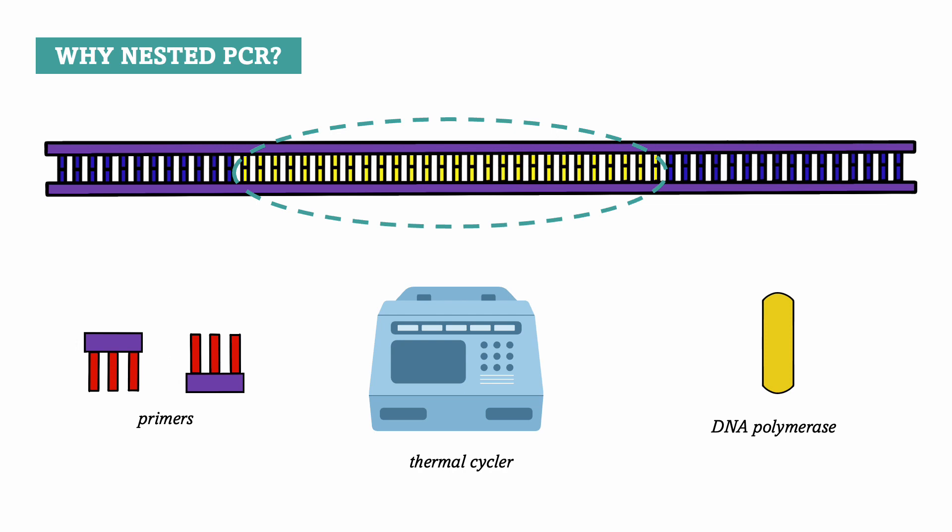What can sometimes happen when you do a PCR is that the primers were not specific enough, and that they bound to a different sequence that we did not want them to. This creates what we call a non-specific product of PCR, a PCR product that does not contain the specific DNA sequence we wanted.